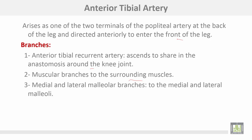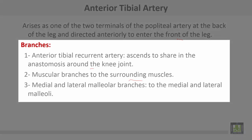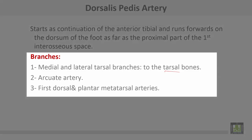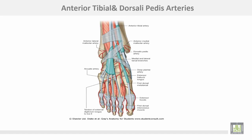The anterior tibial artery arises as one of the two terminals of the popliteal artery at the back of the leg and is directed anteriorly to enter the front of the leg. Branches include: the anterior tibial recurrent artery, which ascends to share in anastomosis around the knee joint; muscular branches to the surrounding muscles; and medial and lateral malleolar branches. The dorsalis pedis artery is the continuation of the anterior tibial artery and runs forward on the dorsum of the foot as far as the proximal part of the first interosseous space. It gives medial and lateral tarsal branches to the tarsal bones, the arcuate artery, and dorsal and plantar metatarsal arteries.